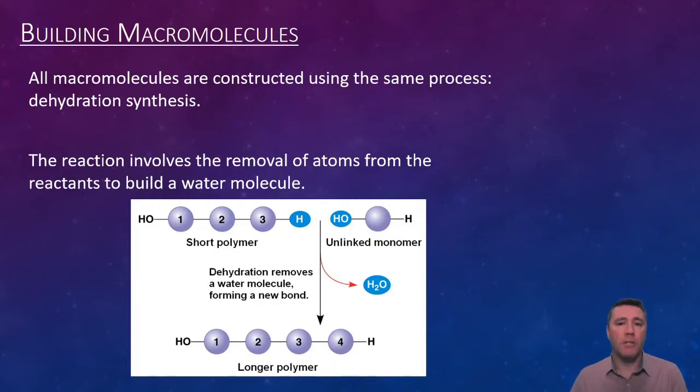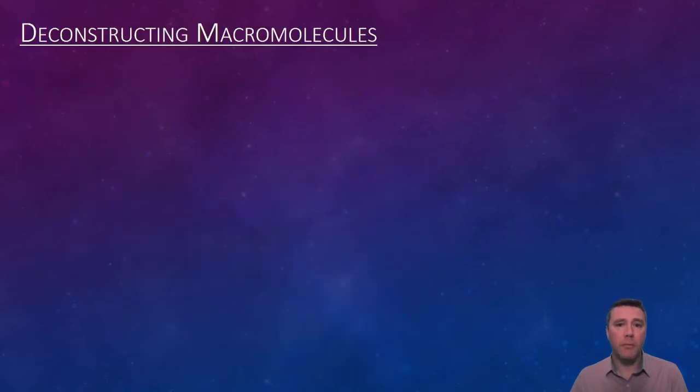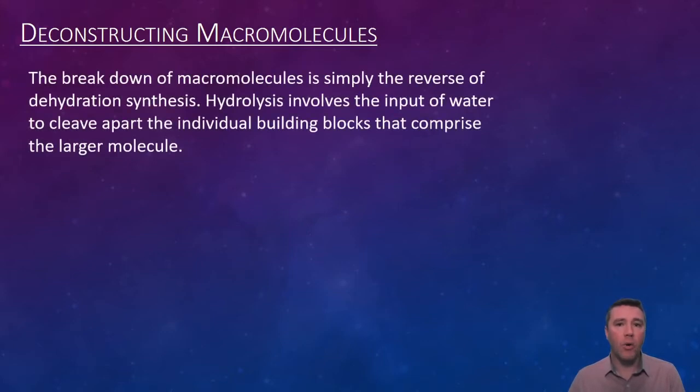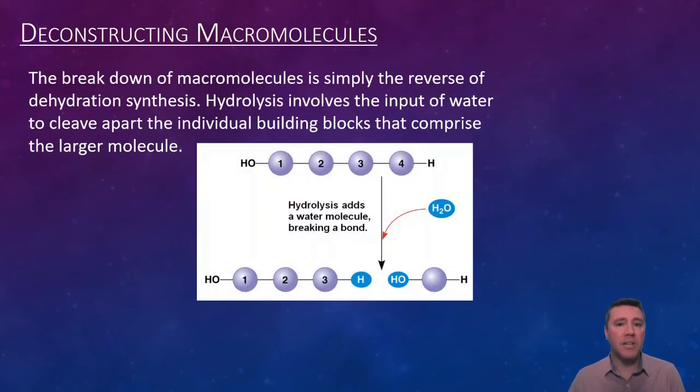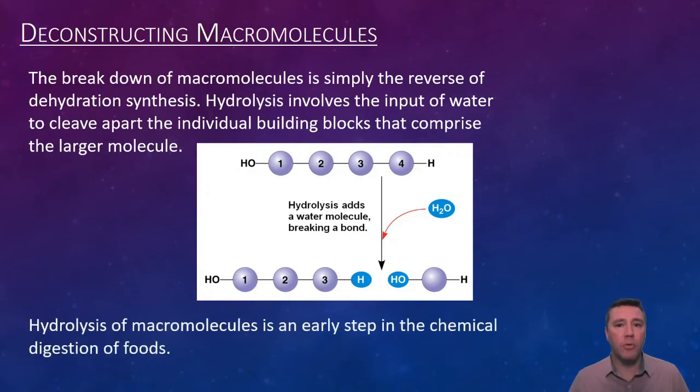The process used to deconstruct macromolecules is simply the reverse of dehydration synthesis. Hydrolysis requires water as a reactant as it is necessary to separate the individual building blocks or monomers from the larger polymer. The hydrolysis of macromolecules is one of the early steps in the digestion of foods. Both dehydration synthesis and hydrolysis are reactions that are catalyzed by a variety of enzymes, which we will learn more about in a later topic.